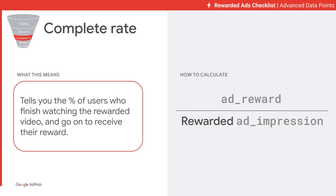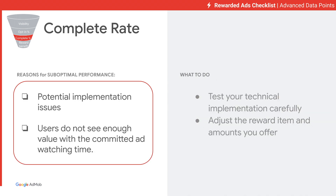The third advanced metric is Complete Rate, which is calculated by Ad Reward over Rewarded Ad Impression. This metric tells you the completion rate from users who watch Rewarded video ads. Suboptimal performance could be caused by implementation issues, or users don't see enough value from the reward to spend time watching the ad. To improve this metric, you can thoroughly test the implementation or adjust Rewarded items and amount to make it more attractive.